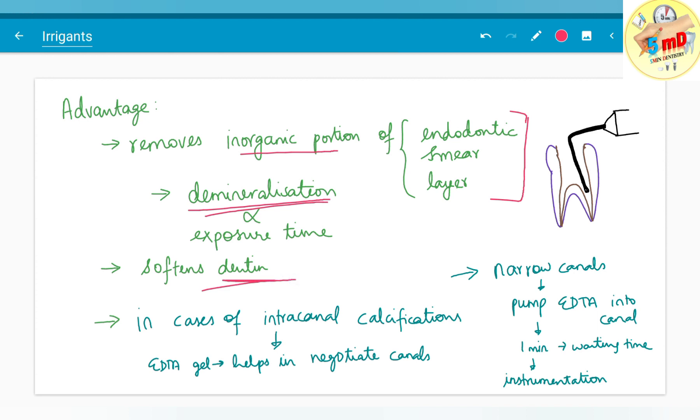As we saw in case of intracanal calcifications, since it facilitates demineralization, EDTA gel helps in negotiating canals. If the canal is narrow or calcified, EDTA is pumped into the canal or coated on the files used, and then it is instrumented.